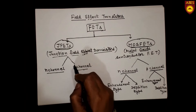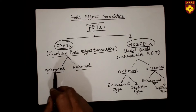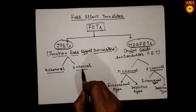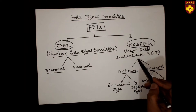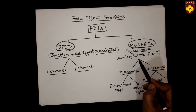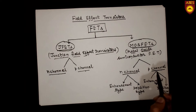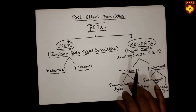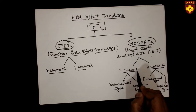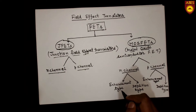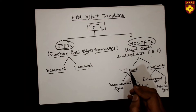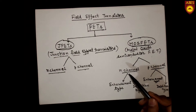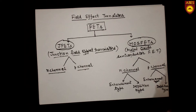JFETs are of two types: N-channel JFETs and P-channel JFETs. Similarly, MOSFETs are also of N-channel and P-channel types. N-channel MOSFETs can be further classified as enhancement type and depletion type. Similarly, P-channel MOSFETs are also classified as enhancement type and depletion type.